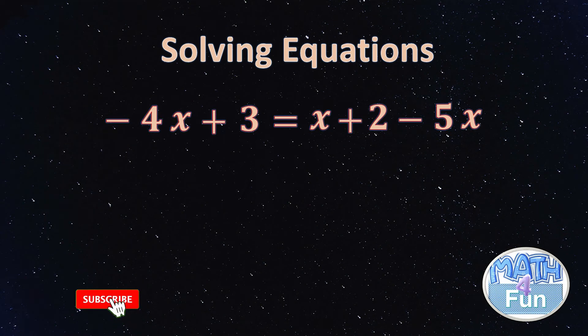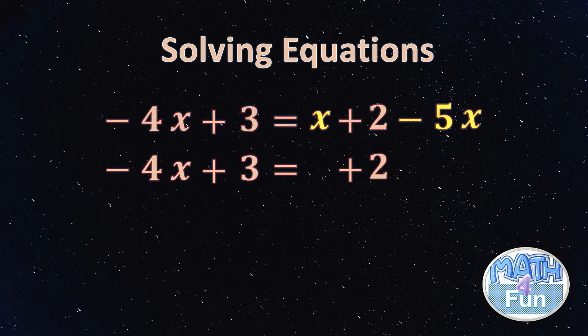Here we have -4x + 3 = x + 2 - 5x. What do we do first? First, as we mentioned, we simplify the right side because we have x and -5x. So we write everything the same except those. x - 5x will give us -4x now.